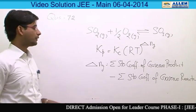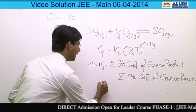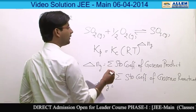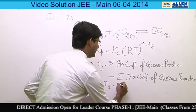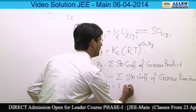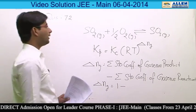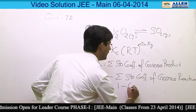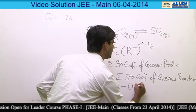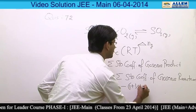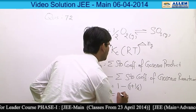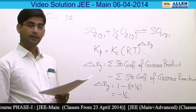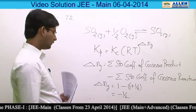According to this reaction, if we calculate delta Ng, that is the stoichiometric coefficient of the product which is 1, minus the stoichiometric coefficients of the reactants which is 1 plus half, it comes out to be equal to minus half. So the correct answer is 4.